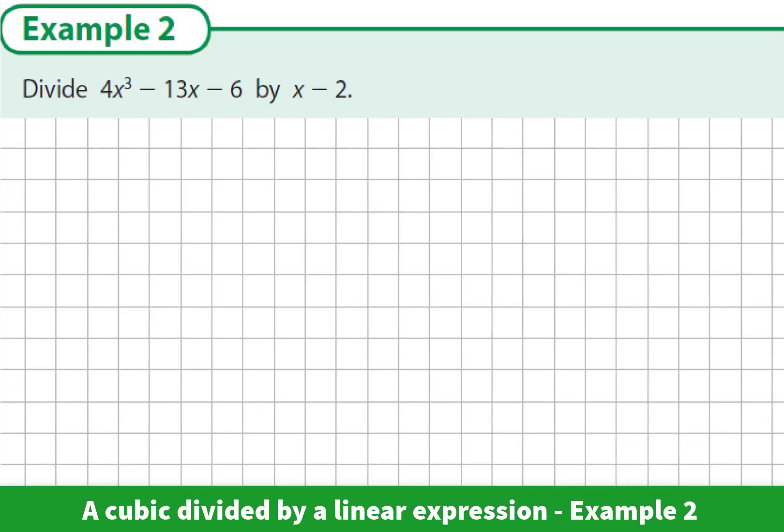Example 2: Divide 4x cubed minus 13x minus 6 by x minus 2. The cubic expression is a little bit unusual. It seems to be missing the x squared term, so we'll write it in here as no x squared or 0x squared.